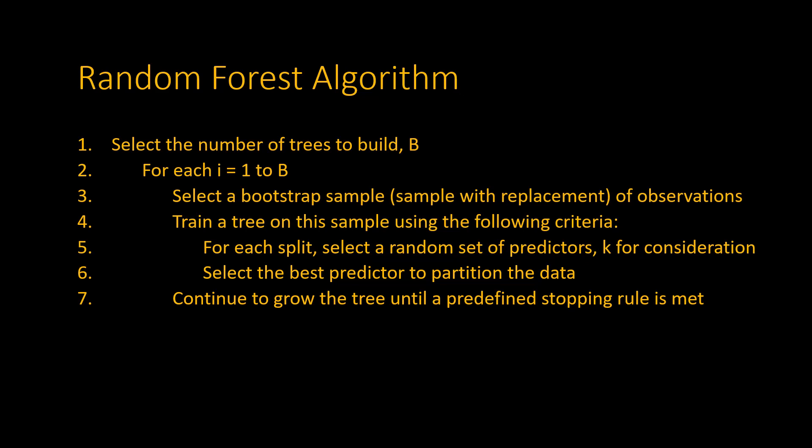Once this tree is built, we repeat steps three to seven for all of our B bootstrap samples. Then, once we have built these B trees, each record is classified based on the majority vote that the trees assigned to it.